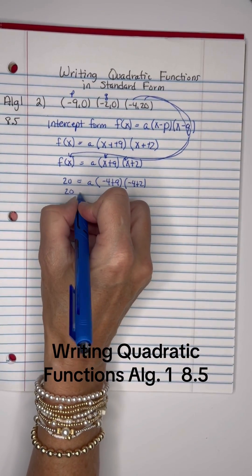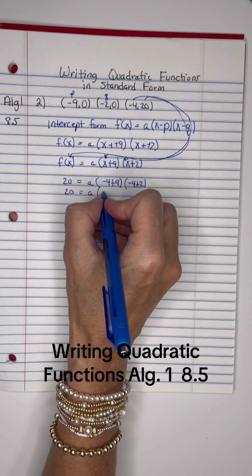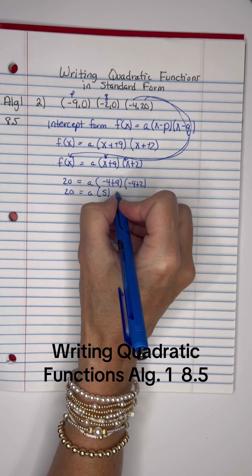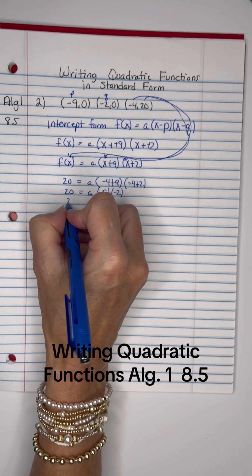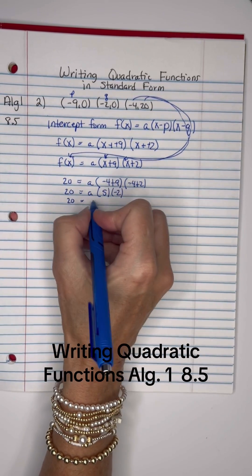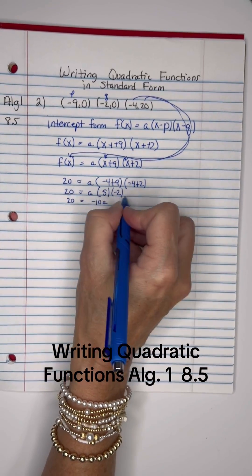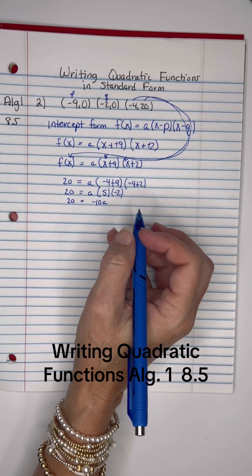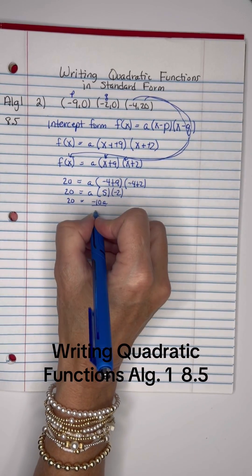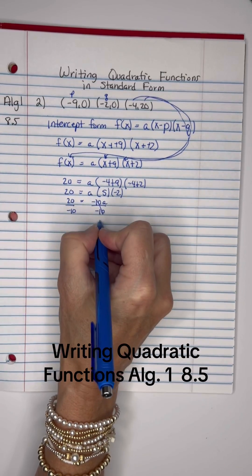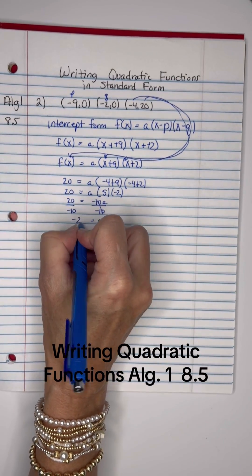20 equals a, negative 4 plus 9 is 5, and negative 4 plus 2 is negative 2, so I have 20 equals – let's put the negative 10 in front of the a. See how I did that just so it looks right. Then divide by negative 10. So a equals negative 2.